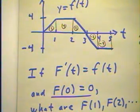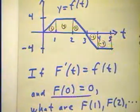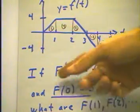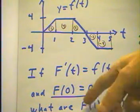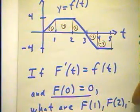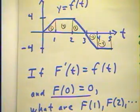and since there are infinitely many antiderivatives, if big F of 0 is 0, this will narrow it down to one antiderivative. The question then is, what are the values of F of 1, F of 2, and so forth?